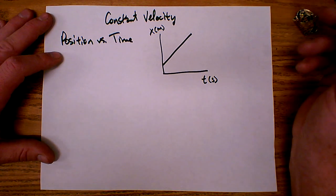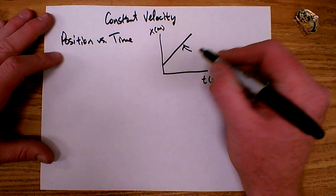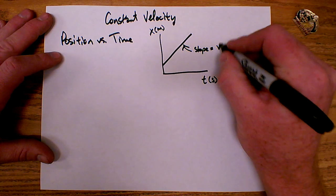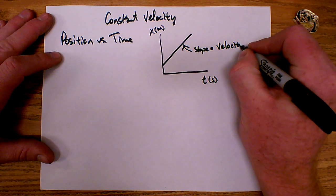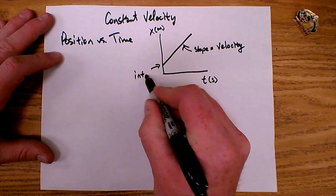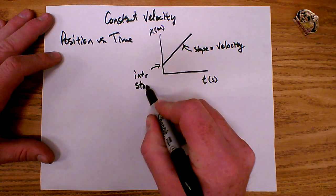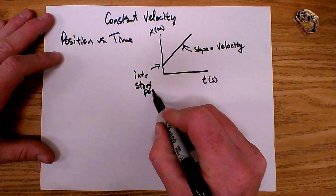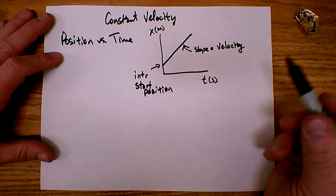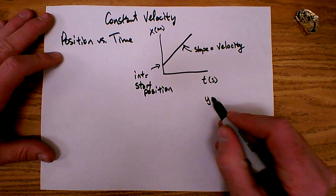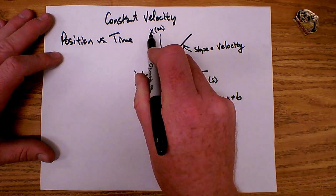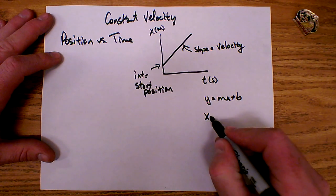On a position versus time graph for constant velocity, the slope of the graph represents the velocity. The intercept of the graph represents the starting position of the object. So the equation of this graph, thinking y equals mx plus b, our y-axis is the position. So we have x equals...